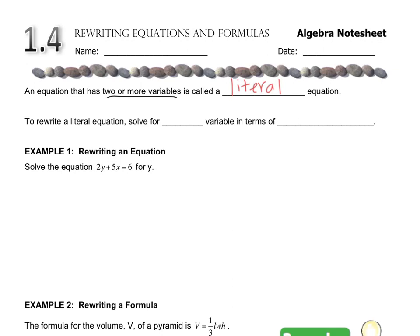The tricky thing about literal equations is that you have multiple variables, so you have to know which one to isolate. The directions will always tell you which one has to be by itself, because if they don't tell you, then you could really pick any variable. The way that you do that is by solving for one variable in terms of the others. There could just be one other, or there could be lots of variables.